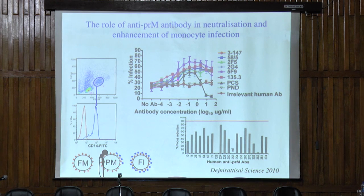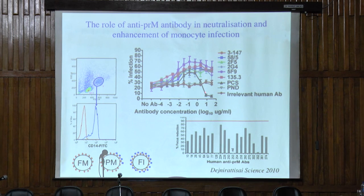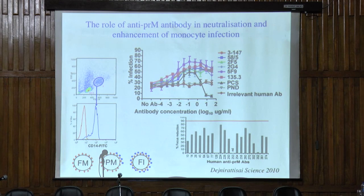Here are control antibodies, and here is a dengue immune serum which is able to neutralize infection very effectively. So the bottom line: anti-pre-M is a major part of the response to dengue virus infection, pretty hopeless at neutralization, and pretty potent at enhancing infection. It's the sort of thing you would want to exclude from a dengue vaccine.